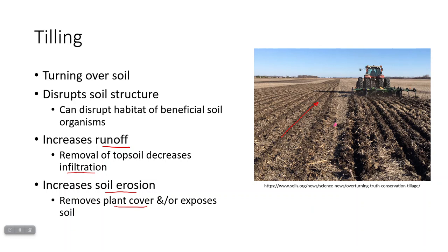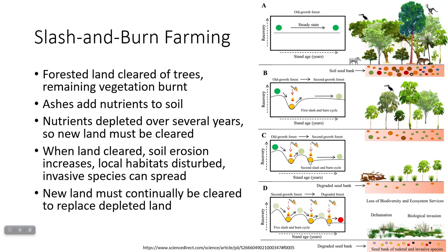Slash and burn farming can also have a large impact. Basically, you cut down all the trees, burn what's left, and then grow crops in the ashes of what you burned down. Those ashes add nutrients to the soil, but unfortunately you're disrupting the normal nutrient cycling in the area, so over the next several years you'll end up depleting the nutrients.